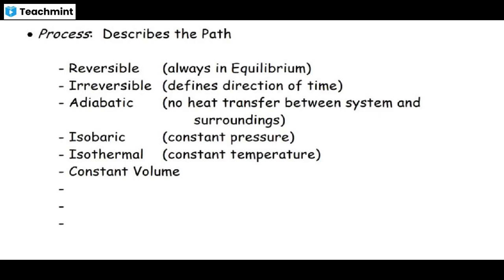Reversible means the system is always in equilibrium. If you release the pressure of a container very slowly, it is always in equilibrium with the surroundings — that is a reversible path. Irreversible means if you suddenly pull the piston, the pressure suddenly changes, and you cannot return the system to the same state by simply reversing the action. Reversible means you can always go back to the original state; irreversible means you cannot.